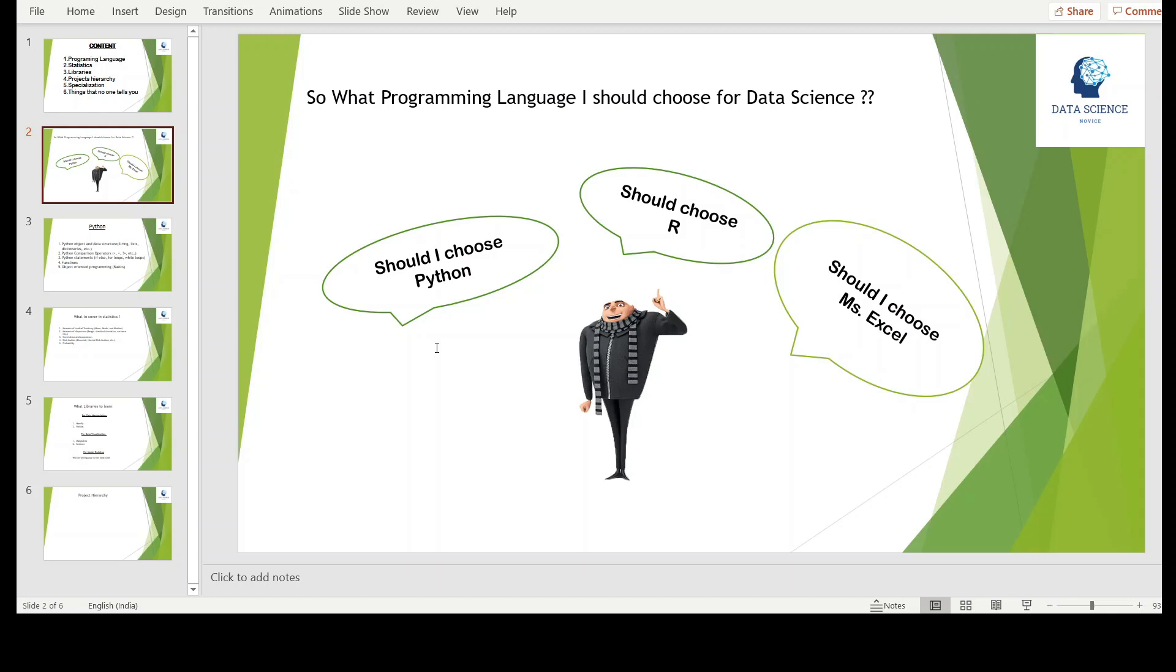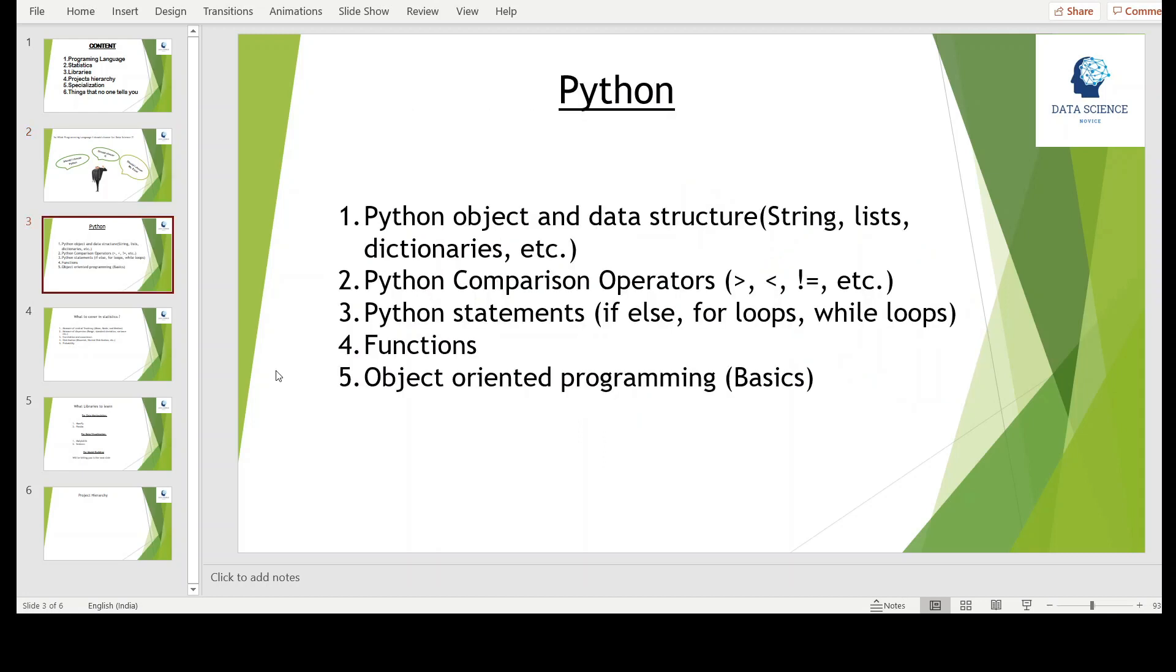The question may arise: how much Python should we know to get started with data science? Here is the list of things you should know in Python. First, you should be familiar with variables, objects, and data structures like lists, dictionaries, and tuples. Once you get comfortable, try solving problems on lists and dictionaries from Geeks for Geeks—that way you will learn better. Next, learn about Python comparison operators like greater than, equals to, and less than. They may seem inconsequential now, but they are very important because we use them to filter our data. Next, start with Python statements and loops because they are used together a lot during your projects.